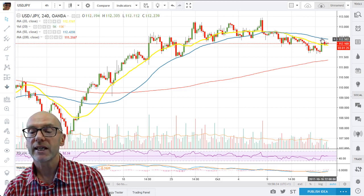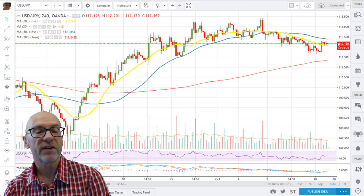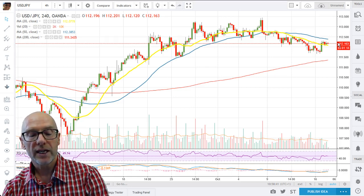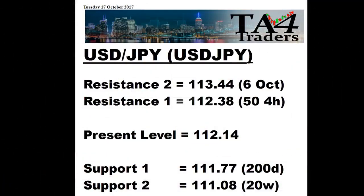To the upside, the key is the downtrend in the 50 average, that's at 112.38. Looking at the support and resistance: 112.38 is the first resistance, and then we've got the high of the 6th of October at 113.44. With support at the 200-day at 111.77 — a move below there would be bearish — and then 111.08 from the 20-week.